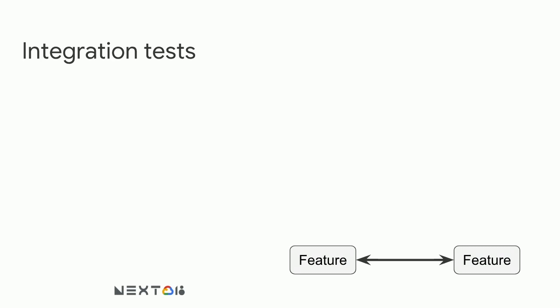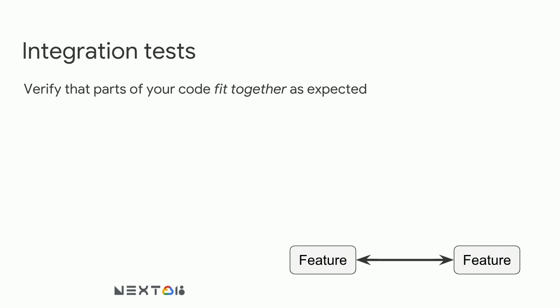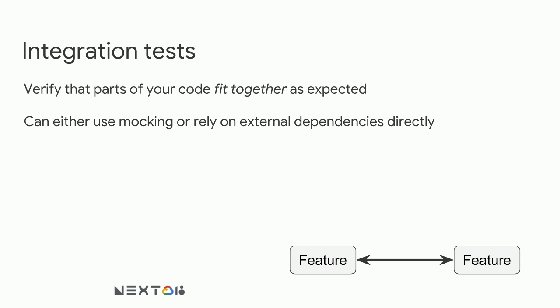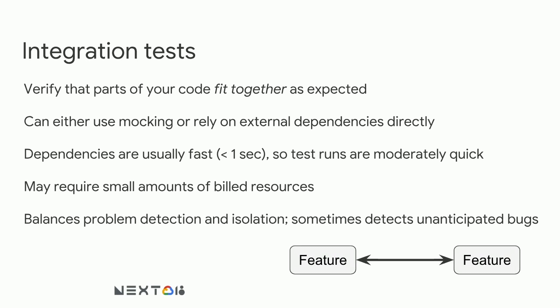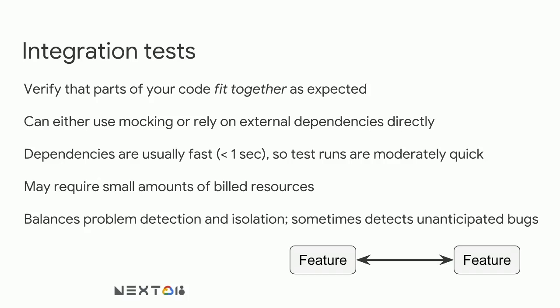Moving on to integration tests. The core idea is to verify that the various parts of your code fit together as expected. Integration tests can either use mocking or rely directly on external dependencies. External dependencies are usually fast and cheap to access, keeping test runs moderately quick, though you may have to pay for cloud resource invocations. They balance problem detection and isolation. Importantly, integration tests can detect unanticipated bugs — whereas unit tests only detect things you specifically check for, integration tests have a large enough scope to catch bugs you haven't thought to check for.